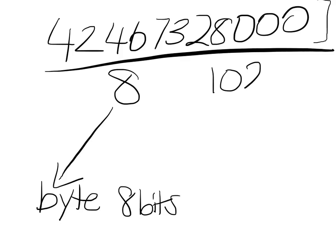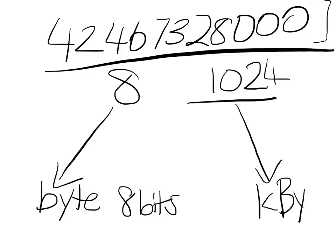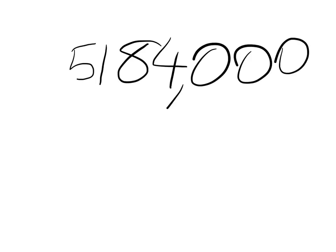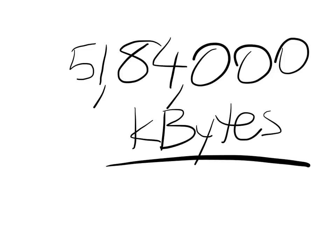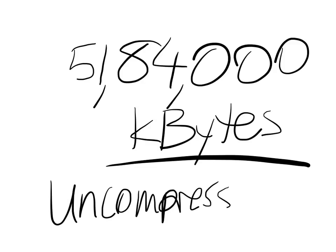I'm also going to divide by 1024, which will give me the number of kilobytes — a more understandable range. So I divide by 8 times 1024 combined. Once I've done that on my calculator, the number I get is 5,184,000 kilobytes. You might still think that's a big number, but this is uncompressed video — that's just the number of bits it takes to represent the video without codecs and things like that. We'll learn more about codecs in the next lesson.